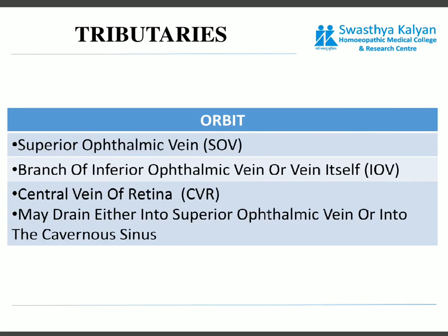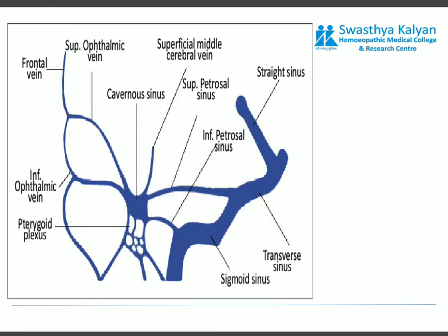Tributaries of the cavernous sinus: the veins that drain into the cavernous sinus include three veins from the orbit — the superior ophthalmic vein, the inferior ophthalmic vein (which either drains directly into the cavernous sinus or gives branches that drain into it), and the central vein of the retina (which either drains directly or drains into the superior ophthalmic vein and then into the cavernous sinus). In this figure you can see the superior ophthalmic vein and inferior ophthalmic vein draining into the cavernous sinus.